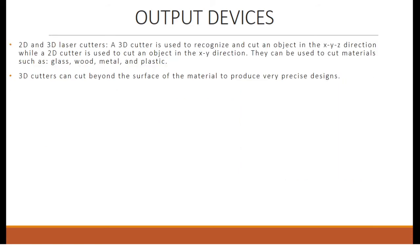2D and 3D laser cutters: A 3D cutter is used to cut an object in the X, Y, and Z directions, while a 2D cutter cuts in the X and Y directions only. They can be used to cut materials such as glass, wood, metal, and plastic. 3D cutters can cut beyond the surface of the material to produce very precise designs.